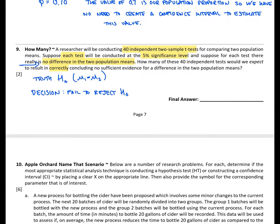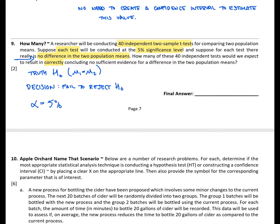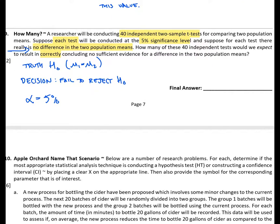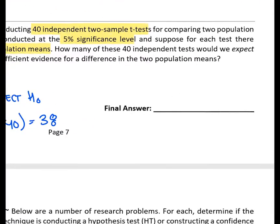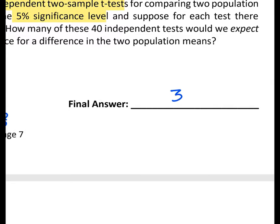This is simply the complement of a type 1 error because a type 1 error is when H0 is true and we mistakenly reject H0. We remember that the type 1 error is equal to alpha, and we're given that 5% significance level here. So if we want to find the complement of that, all the times that we would correctly fail to reject, we would simply have to take 95% and multiply it by the number of tests we have to get the expected amount of correct decisions. So for this problem, our final answer is simply the value of 38.